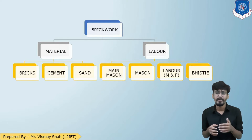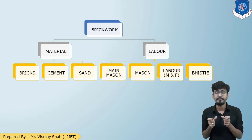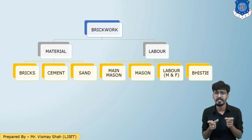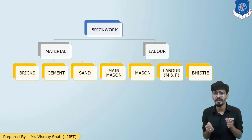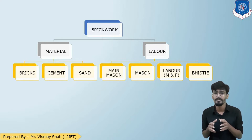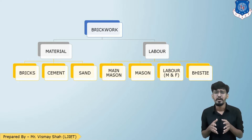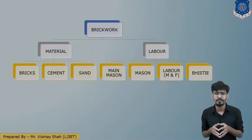We have already discussed the logic behind the Bhisti. The Bhisti is the person who is the weakest among the laborers, or whose physical or psychological condition is not good enough, so he is allocated minor works such as curing or other temporary work. Now let us begin with the material quantity calculations.